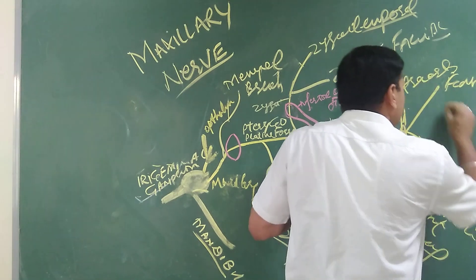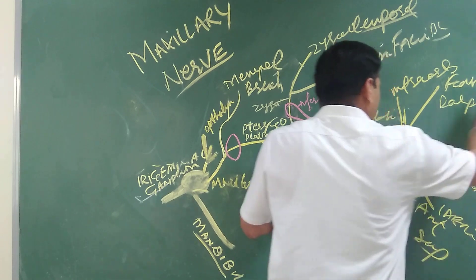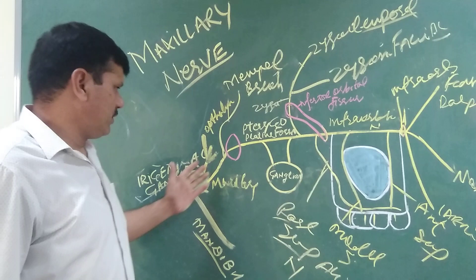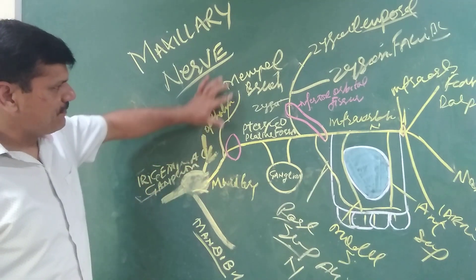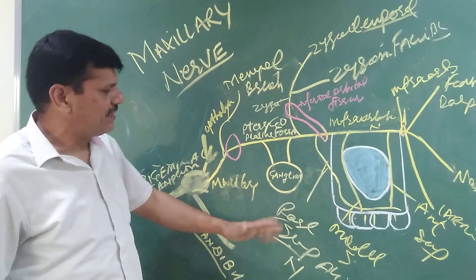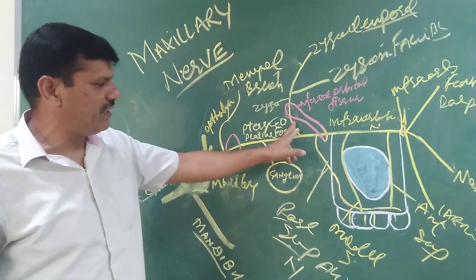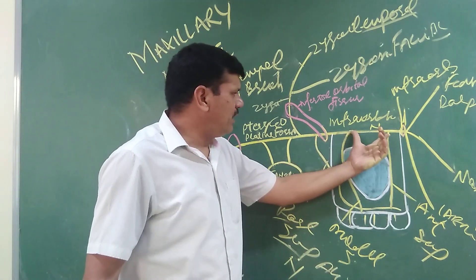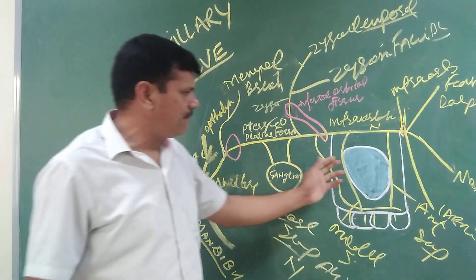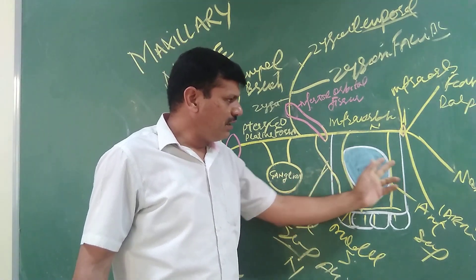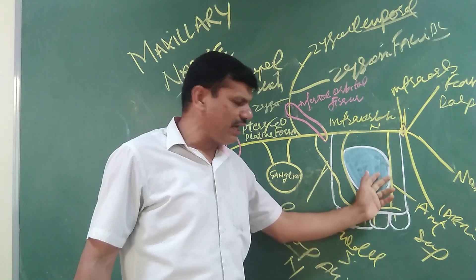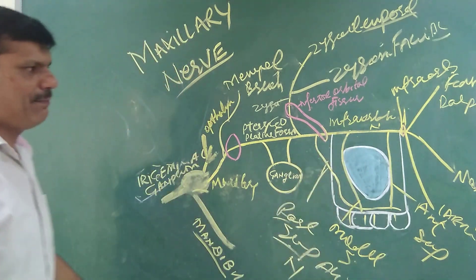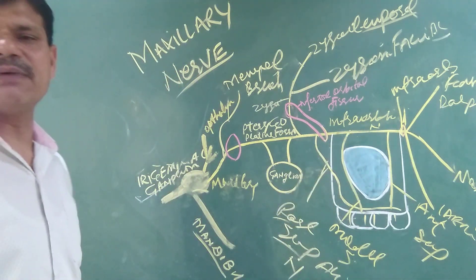In summary: in the middle cranial fossa it gives the meningeal branch; in the pterygopalatine fossa it gives two ganglionic branches, the zygomatic branch, and the posterior superior alveolar nerve; in the floor of the orbit it gives the middle and anterior superior alveolar nerves; and when it emerges through the infraorbital foramen, it gives three branches — palpebral, nasal, and labial.